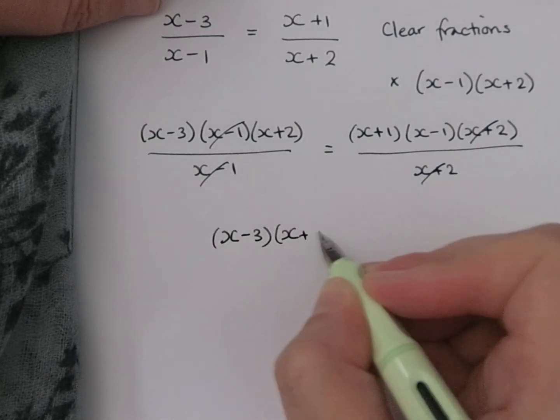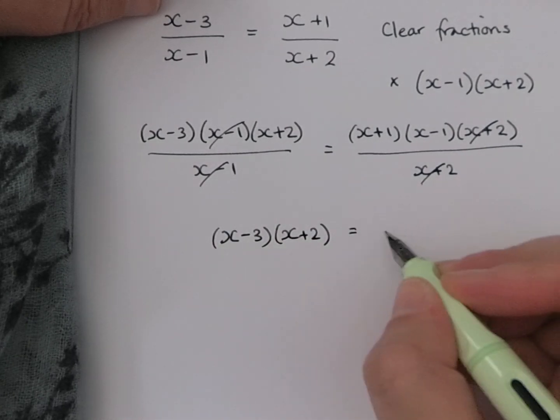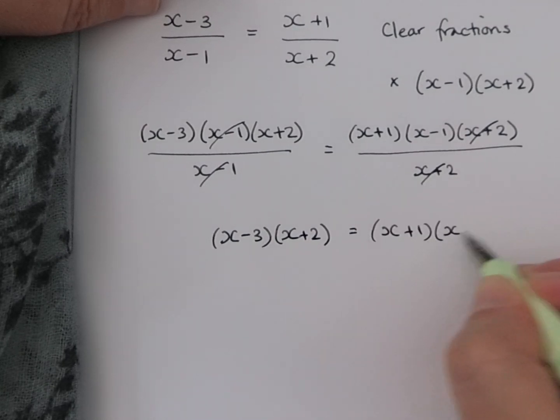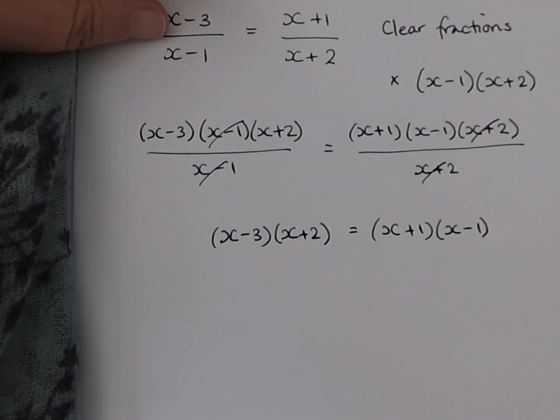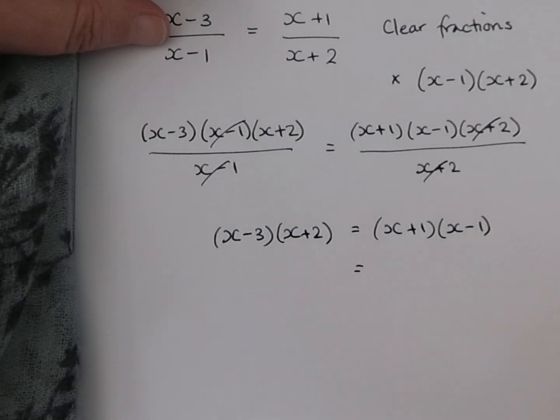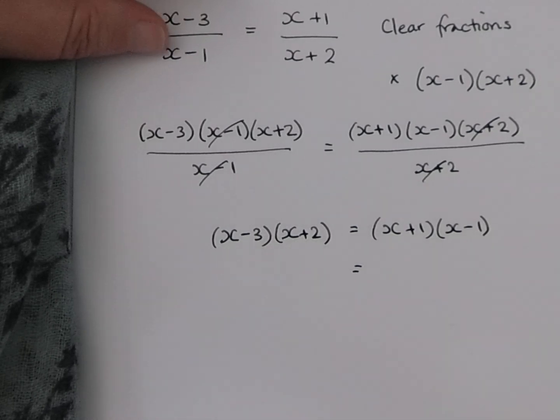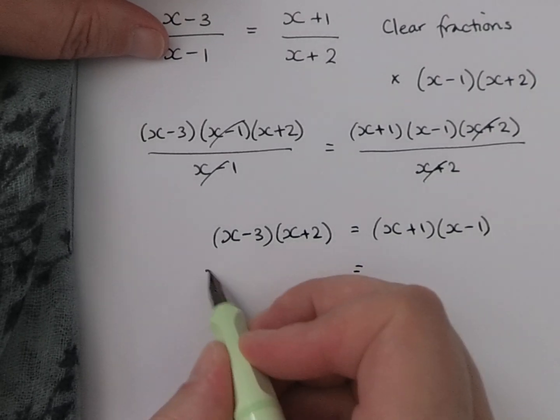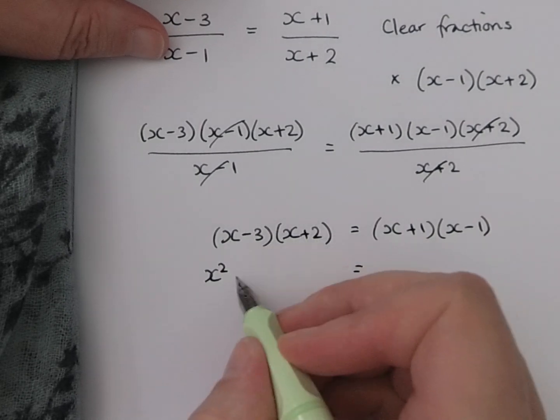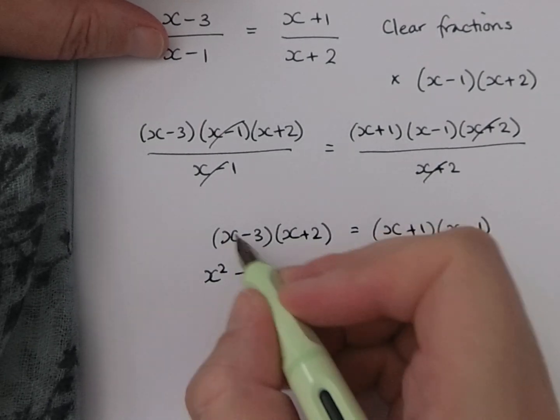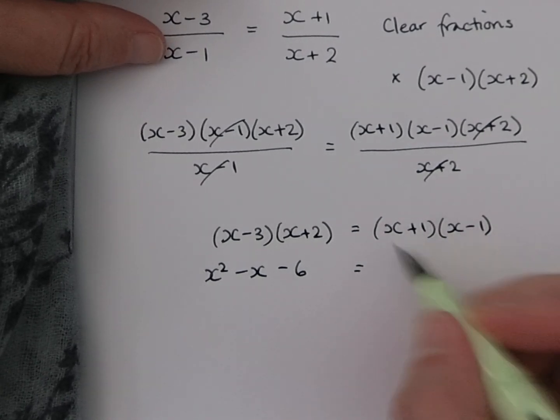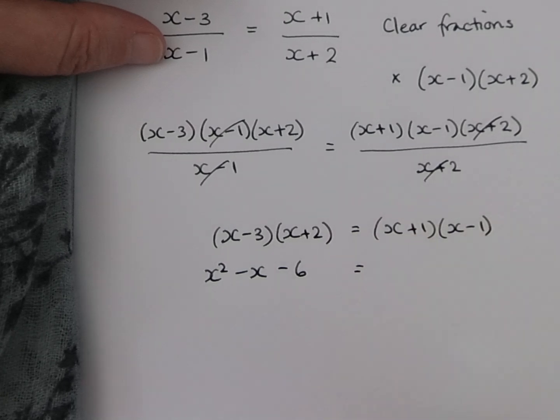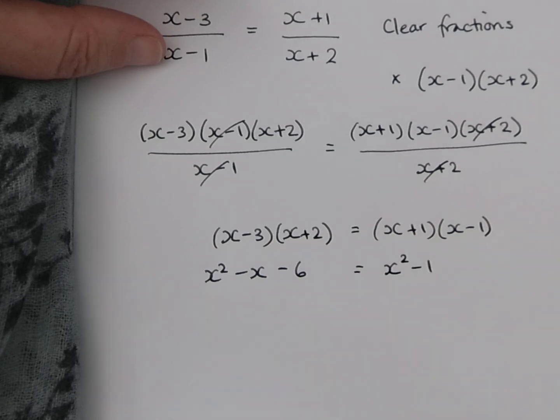So (x-3)(x+2) on the left, and (x+1)(x-1) on the right. Let's expand our brackets so that we can then collect like terms and solve. Right-hand side, well, we're going to end up with a quadratic. x times x, we've got x squared plus 2x minus 3x, we're going to have a minus x there and a minus 6. Right-hand side should spot straight away, I hope, that you've got a difference of two squares so that the x part is going to disappear. So you've got an x squared minus 1 there.